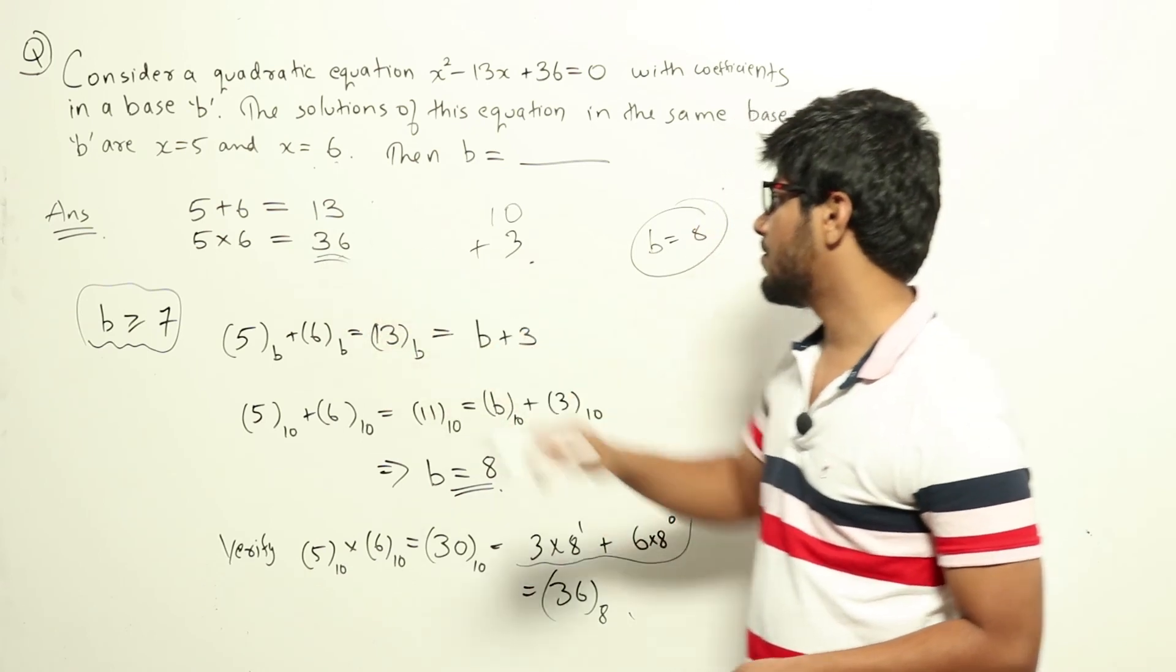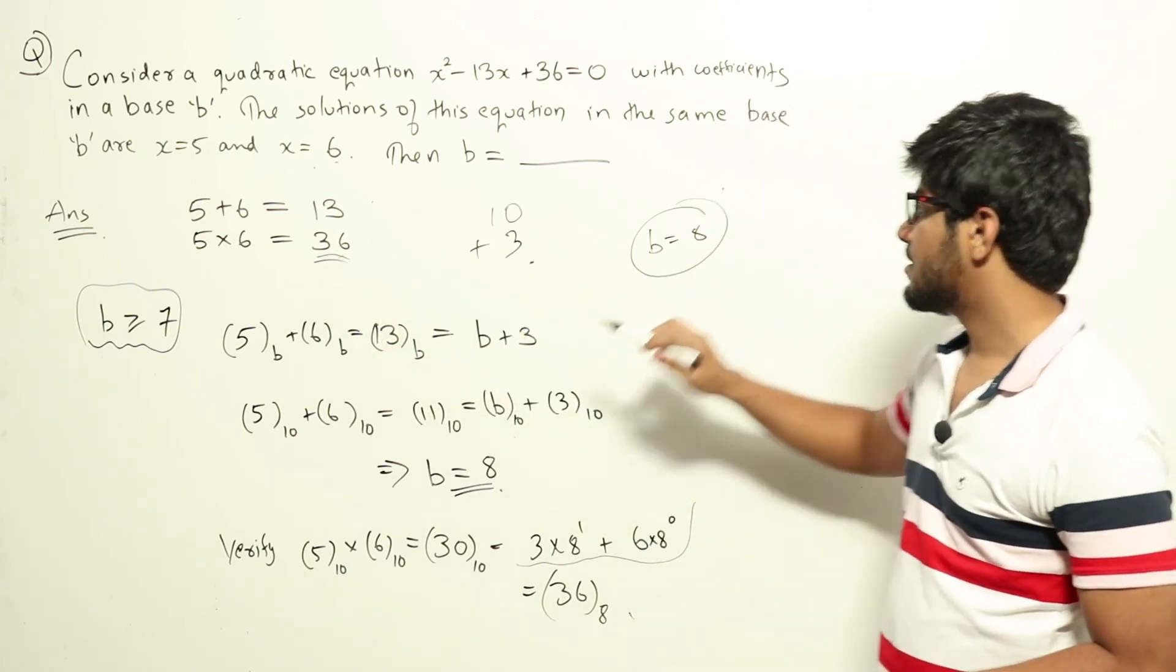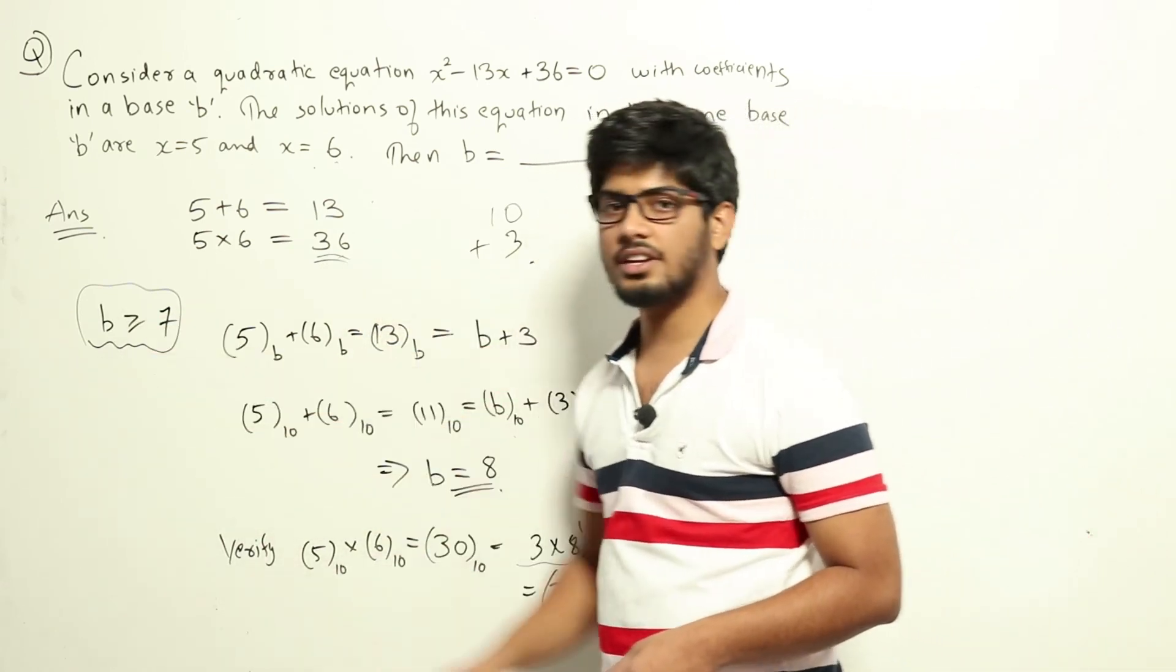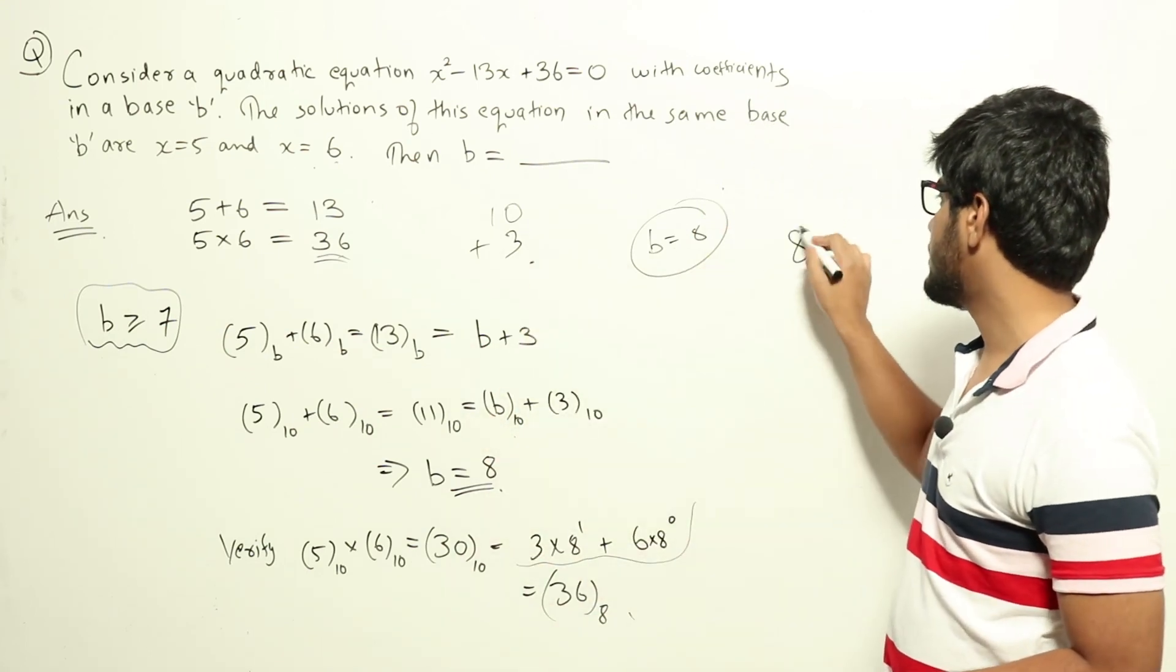Now this was correct. The 36 was the number we got. So the base is 8. And the initial condition was that base should be greater than or equal to 7. That is also true. So 8 is the answer to this question.